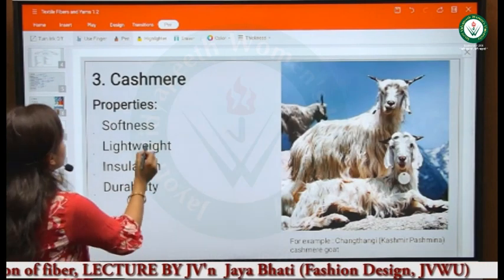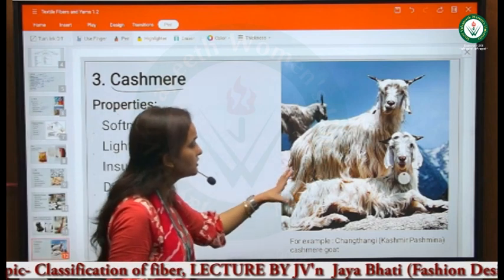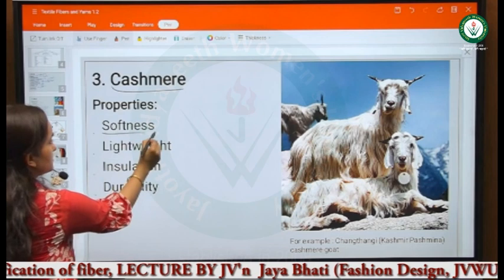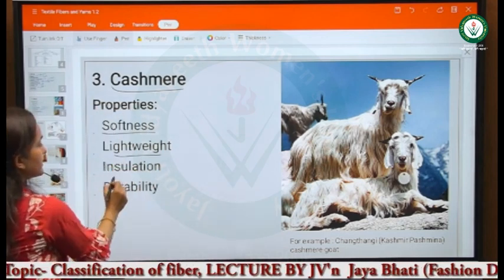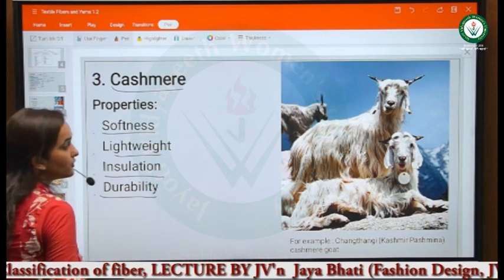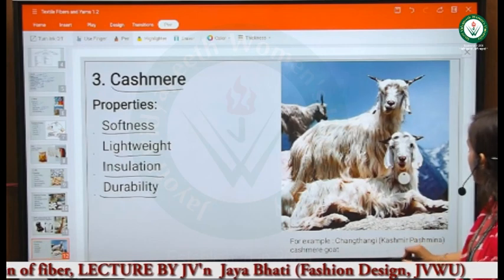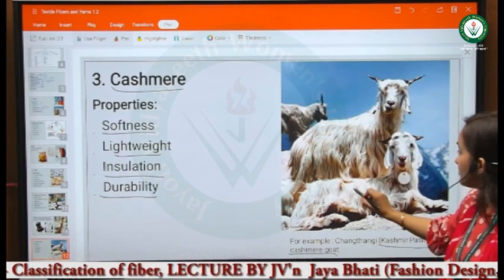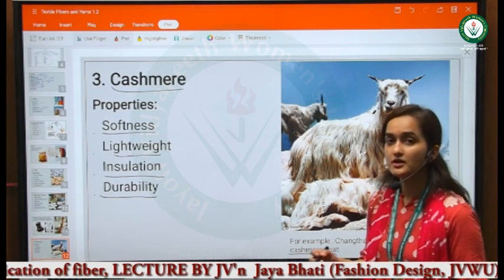The third animal fiber is cashmere. Cashmere comes from the Pashmina Kashmiri goat. Its properties include being very soft, lightweight, providing excellent insulation, and being very durable and strong. It is produced from the Chantangi goat found in regions including India and Myanmar.